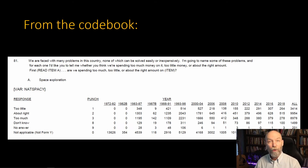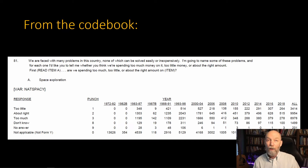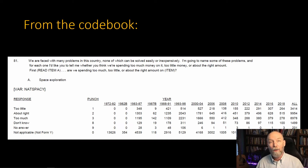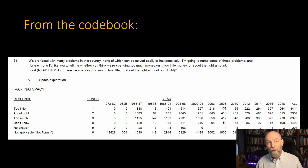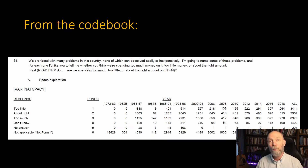In the 2018 General Social Survey, there were subsamples, so some people were asked a certain set of questions while others in the same year's sample were asked questions worded slightly differently. For example, one version asked about 'assistance to the poor' while another asked about 'welfare.' Even though welfare is a system meant to help the poor, people answered very differently depending on which version they received.